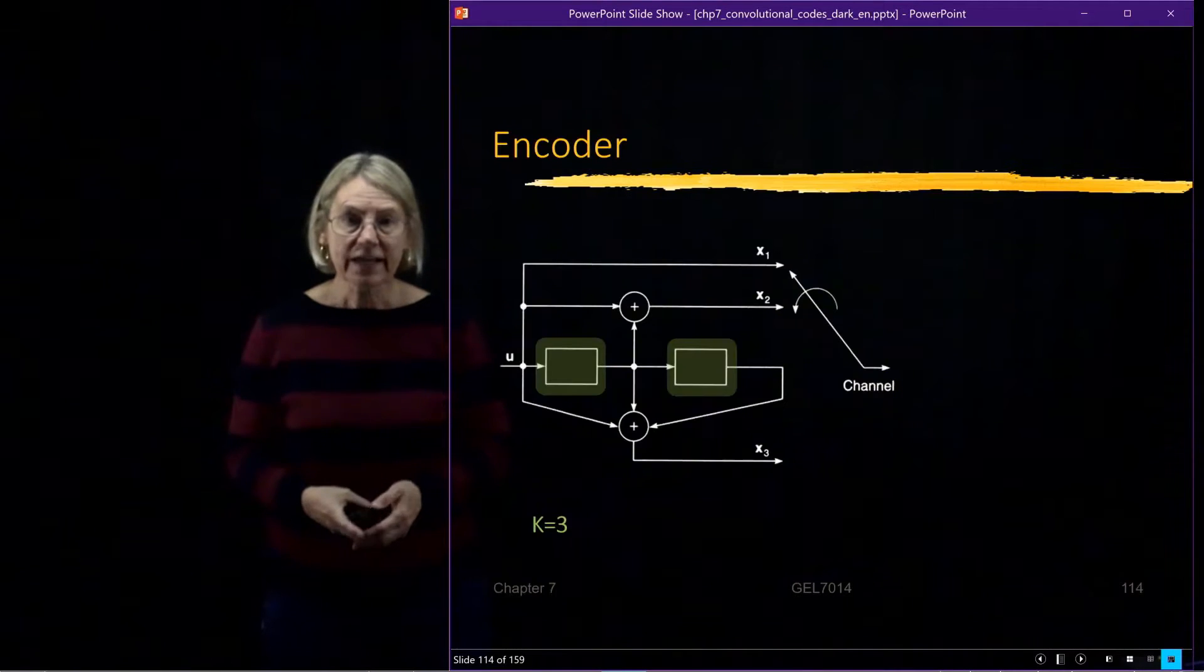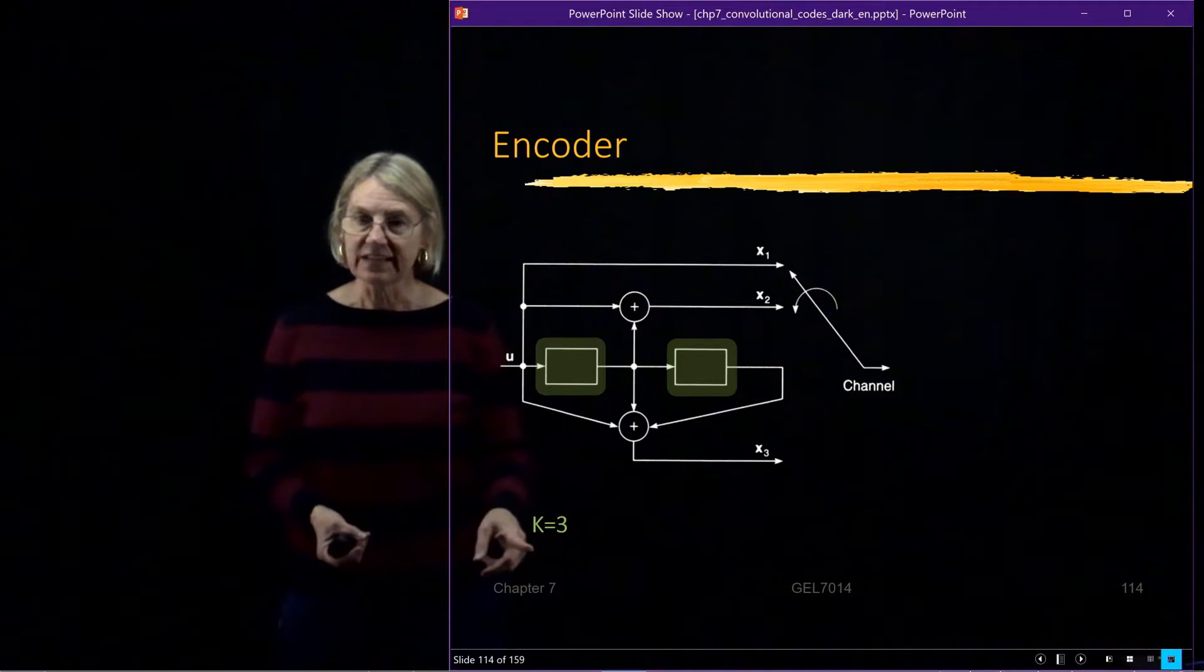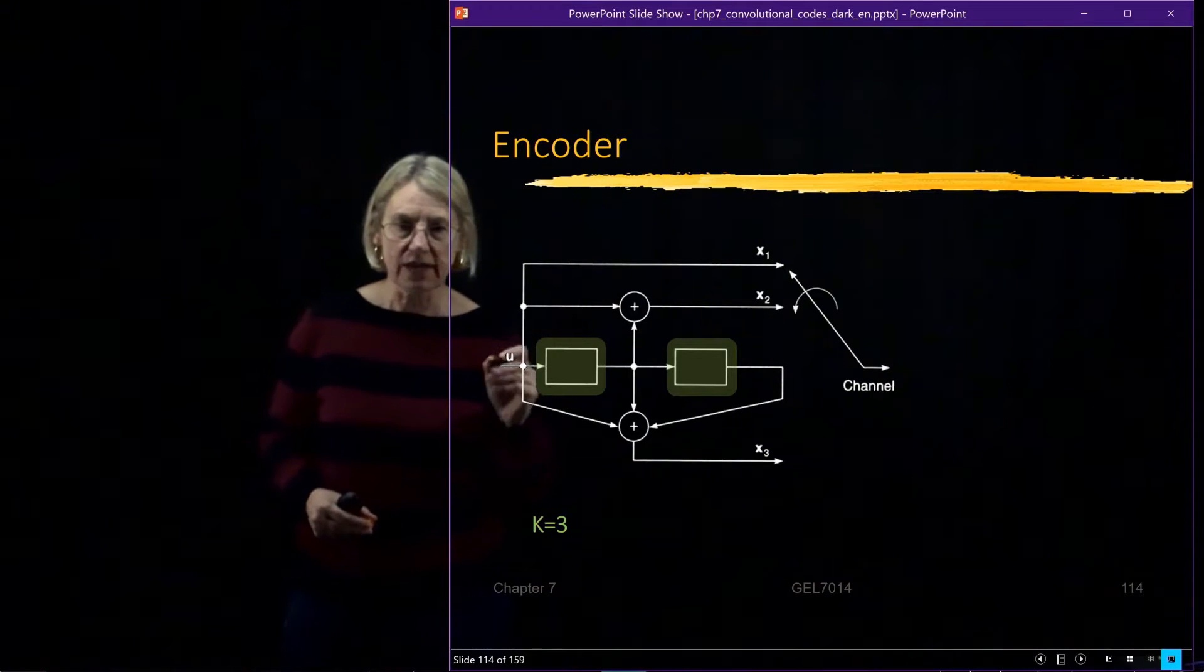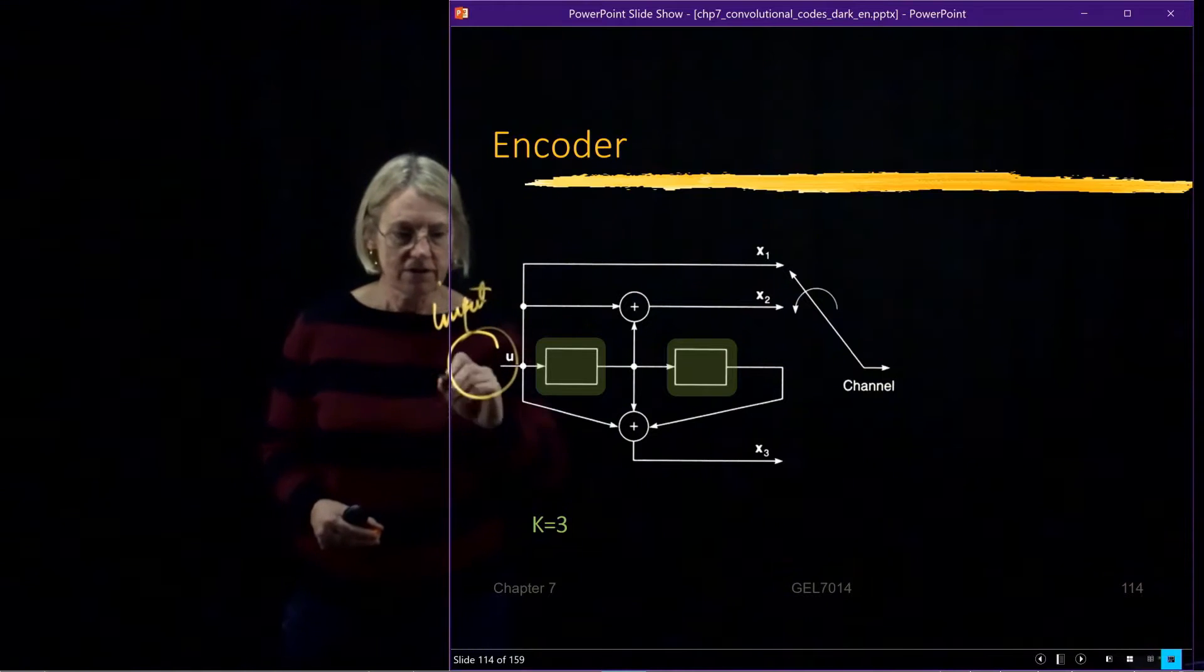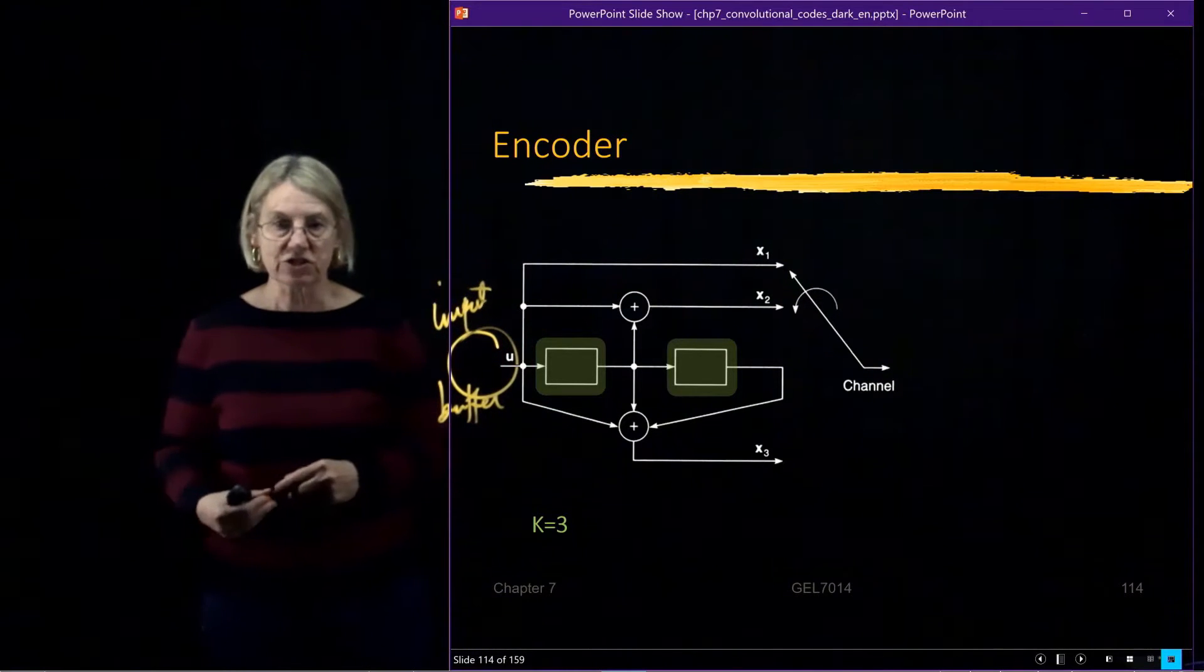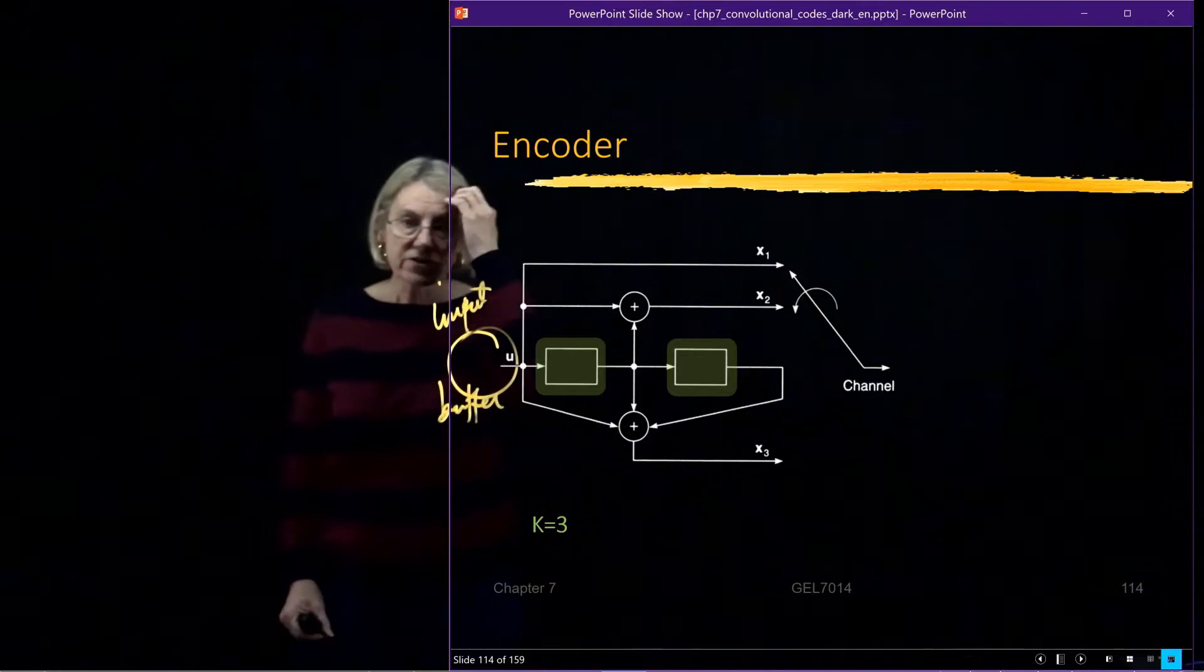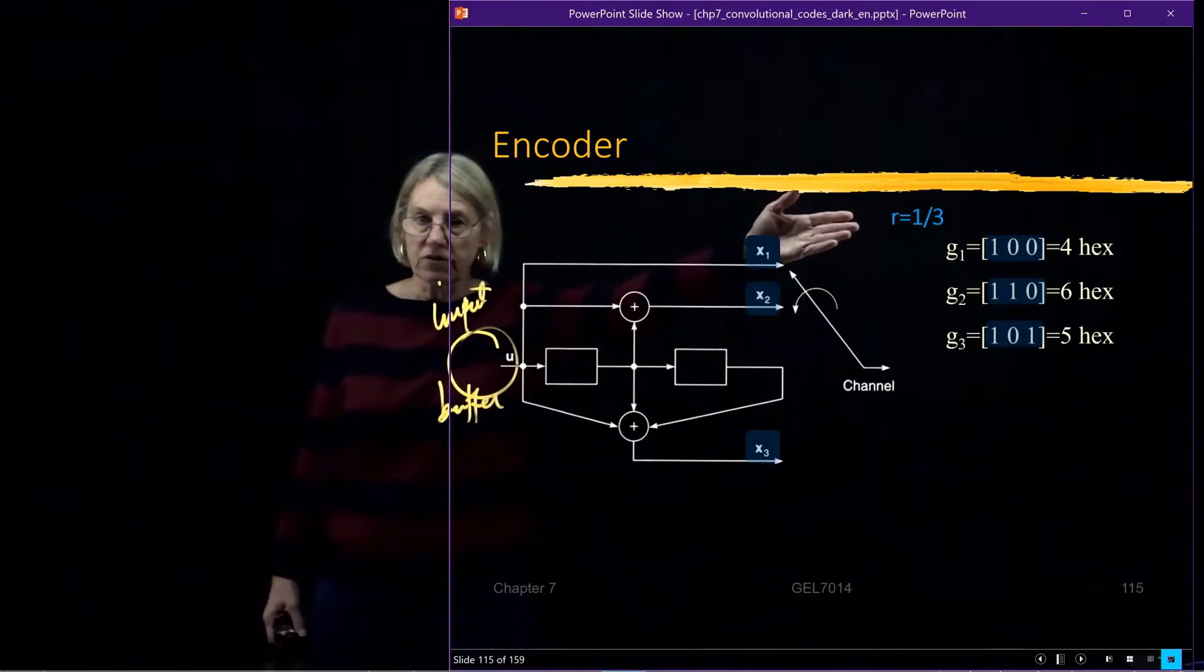So, we're looking at this example, and as I said, we're going to have K, the constraint length, equal to 3. I'm only showing you the two registers which represent the state, but of course there's also here the input buffer, which would be the third shift register for when I put in my data. But here we'll just show the two state registers. Now there's three outputs because I have a rate 1 over 3.